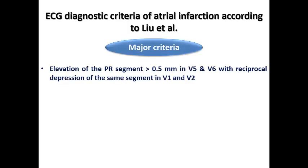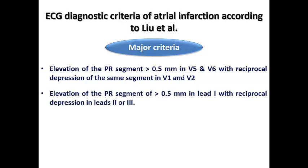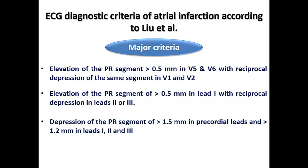ECG diagnostic criteria for atrial infarction were released by Lev et al, who described major and minor criteria. The first major criterion is PR segment elevation of more than 0.5 mm in V5 and V6 — or in other literature, V3 to V6 — with reciprocal depression of the PR segment in V1 and V2. Another major criterion is elevation of the PR segment more than 0.5 mm in lead I with reciprocal depression in leads II or III. A third criterion is PR segment depression of more than 1.5 mm in all precordial leads and more than 1.2 mm in leads I, II, and III, plus or minus any form of atrial arrhythmia accompanying these ECG criteria.